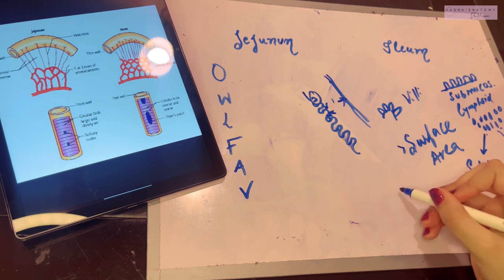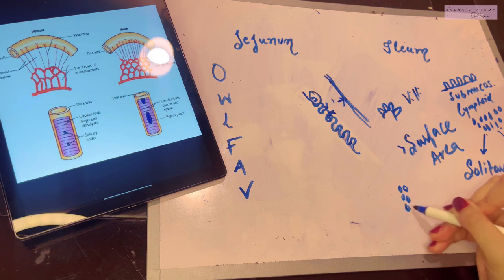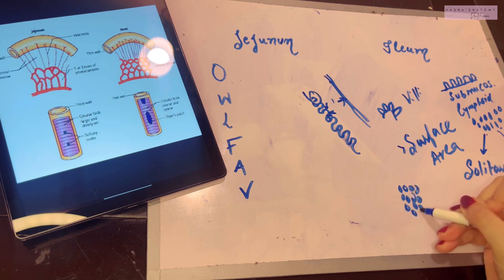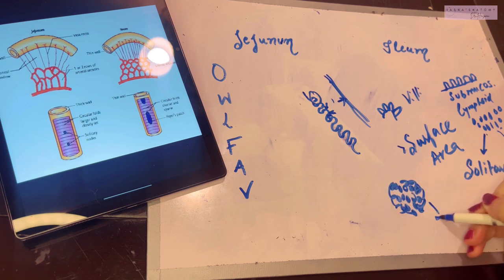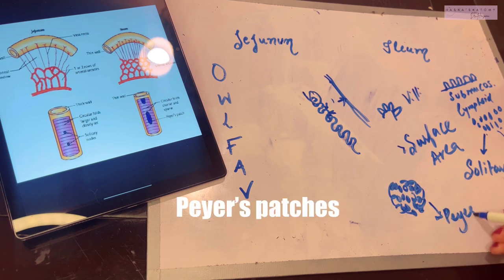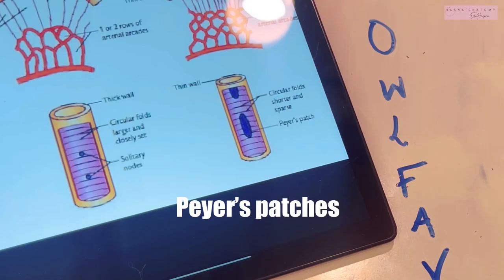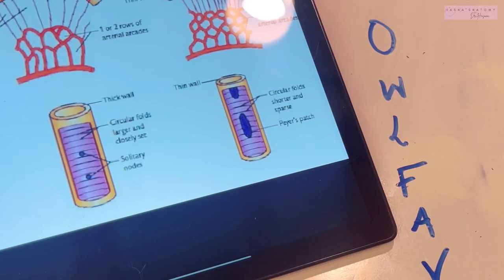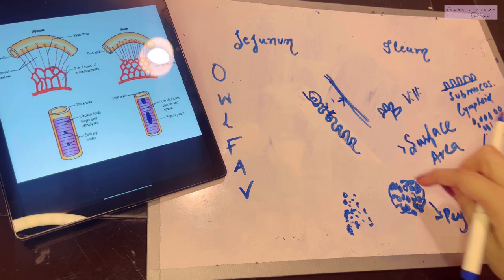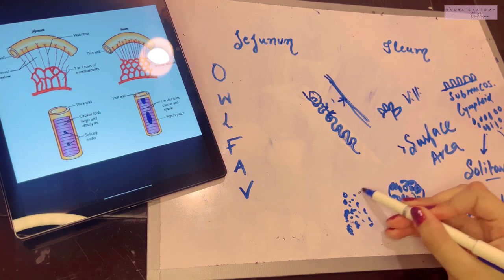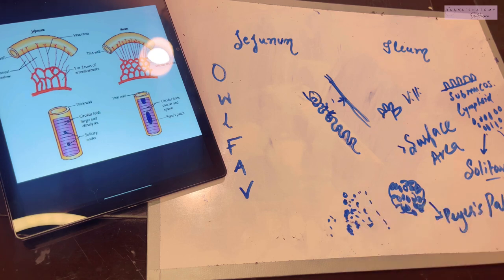When aggregated lymphoid follicles — masses of lymphocytes — collect in a specified location within the submucosa, they form what are called Peyer's patches. Peyer's patches help fight off infection and are widely spread within the submucosa of the intestine. Solitary lymphoid follicles, by contrast, are not aggregated in a specific place — they exist individually throughout the submucosa, also serving to fight off infection.